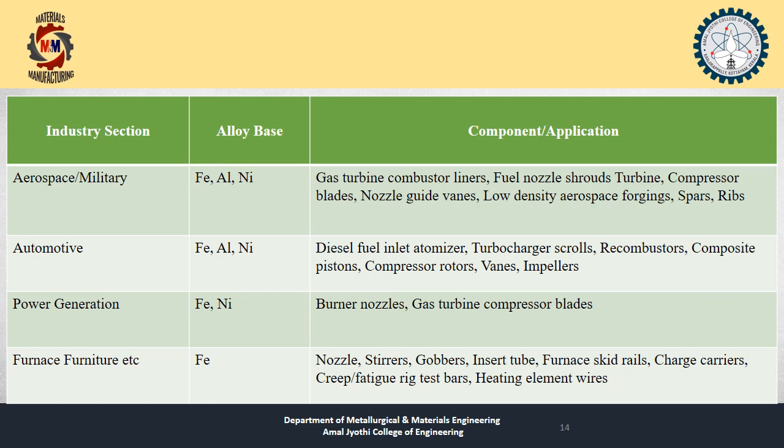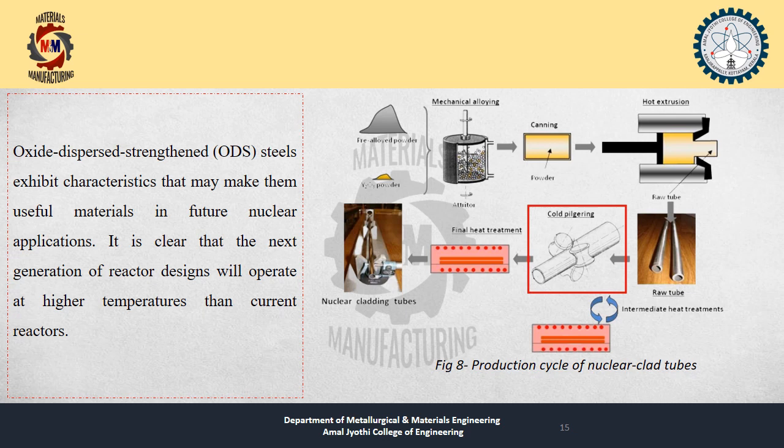ODS steels exhibit characteristics that may make them useful materials in future nuclear applications. It is clear from this study that the next generation of reactor designs will operate at higher temperatures than current reactors. Figure 8 shows the production cycle of nuclear fuel tubes, giving a clear picture of ODS alloy use in nuclear applications.